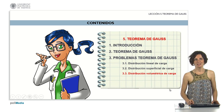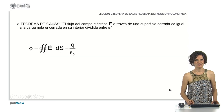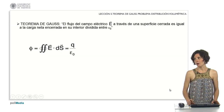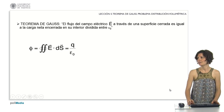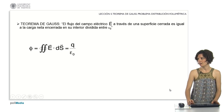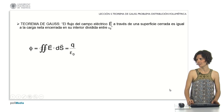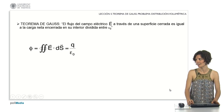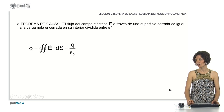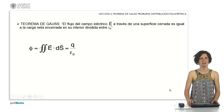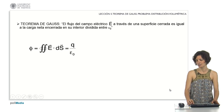We are going to calculate the electric field created by a volumetric charge distribution. But first, let's recall what Gauss's law says: the electric field flux through a closed surface is equal to the net charge enclosed inside it divided by the electric permittivity in the vacuum, epsilon sub-zero.